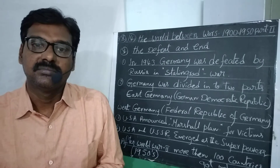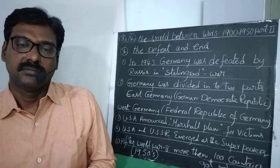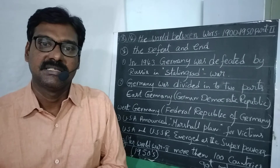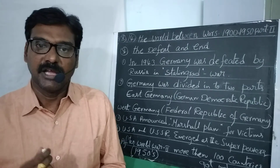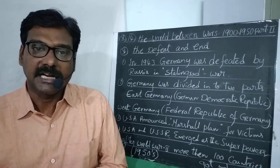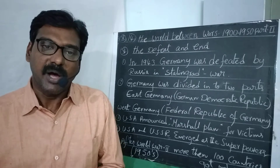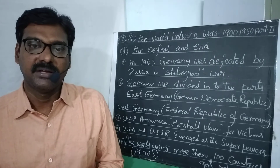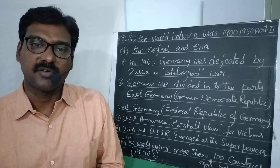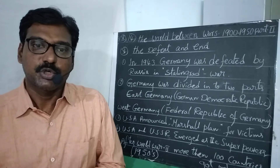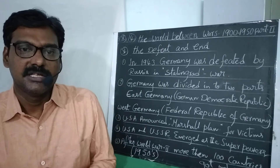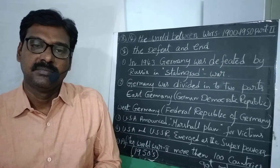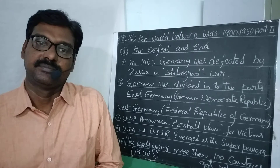After the atom bombs were dropped, Japan was defeated by America and Japan surrendered to America. Later Japan implemented a constitutional monarchy type of government, just like the British government — a democratic system of government. Japan's parliament is known as the DIET.